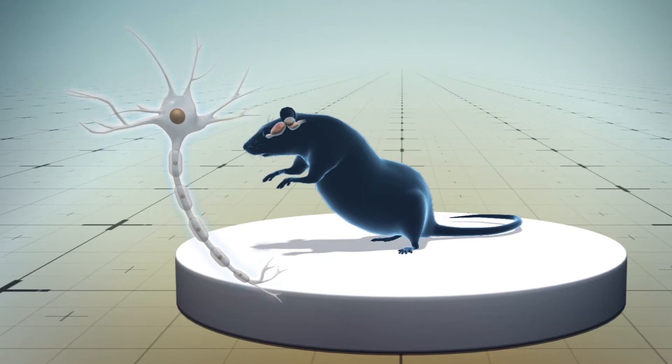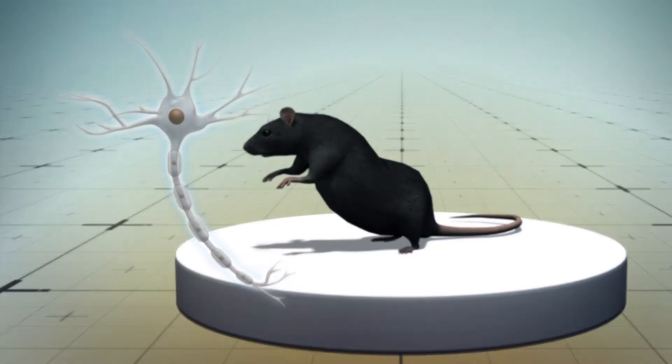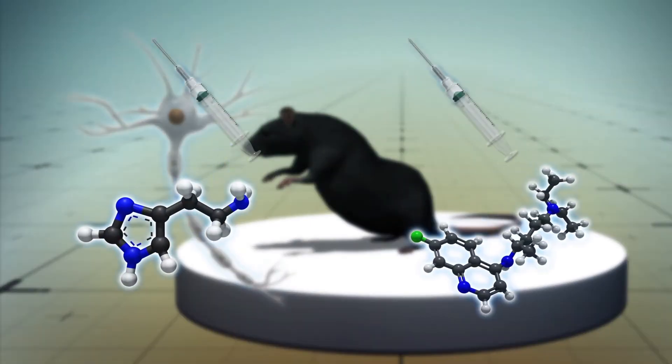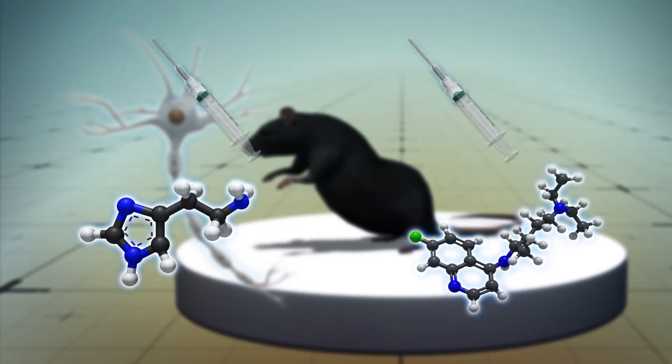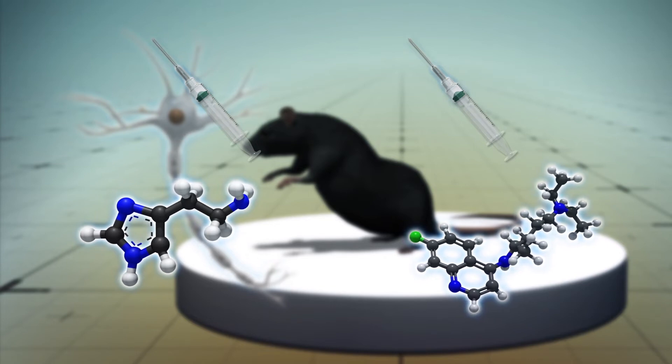Researchers from the Chinese Academy of Sciences studied periaqueductal gray neurons of freely moving mice that were induced to scratch through injections containing histamine or chloroquine. Histamine is an organic compound involved in itch perception and chloroquine is a medication used to treat malaria.